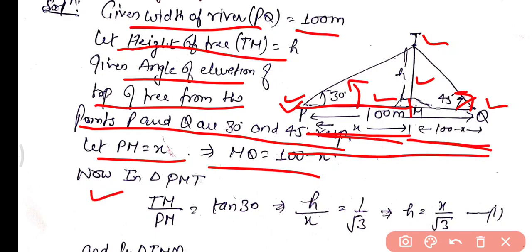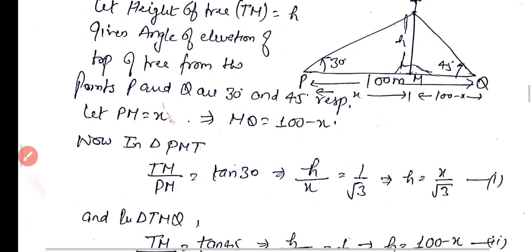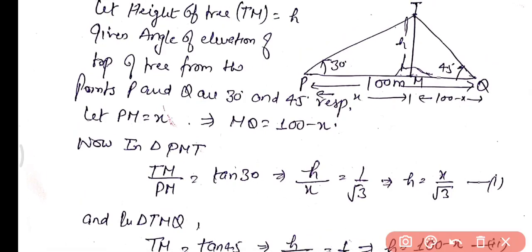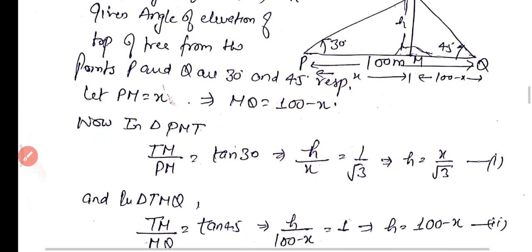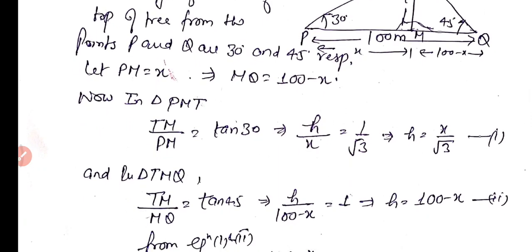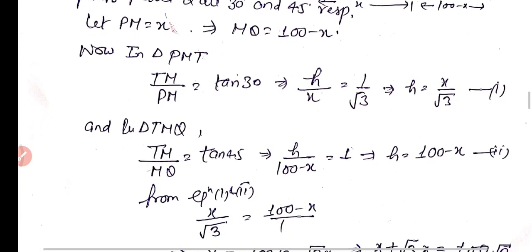In right-angle triangle TMQ: TM/MQ = tan45°, so H/(100 − X) = 1, giving H = 100 − X — equation 2. From equations 1 and 2: X/√3 = 100 − X. Cross-multiplying: X = 100√3 − √3·X, so X + √3·X = 100√3, giving X(1 + √3) = 100√3, therefore X = 100√3/(√3 + 1) — equation 3.